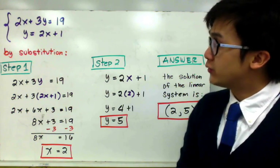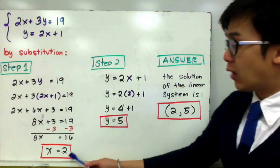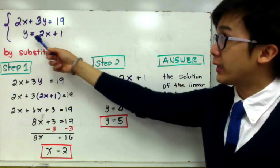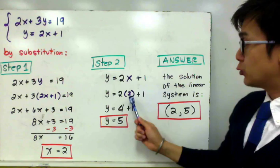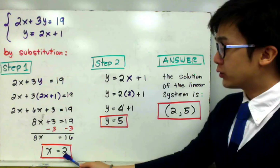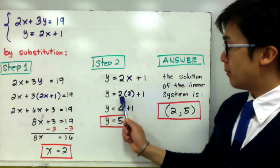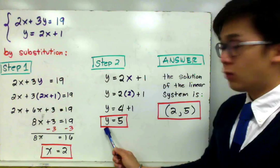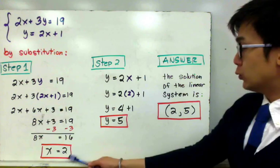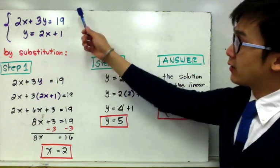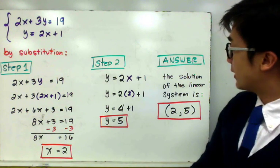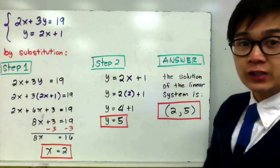Our next goal is to find the value of y by substituting x equals 2 into our second line, y equal to 2x plus 1. Replacing x with 2, we get y equal to 2 times 2 plus 1. Multiplying 2 and 2 gives us 4, so y is equal to 5. The solution of the linear system is (2, 5), which is the point of intersection of the two lines — found without even seeing the graph.